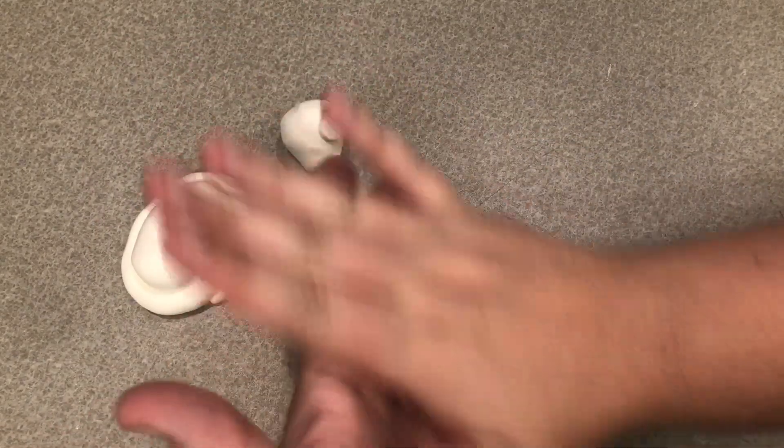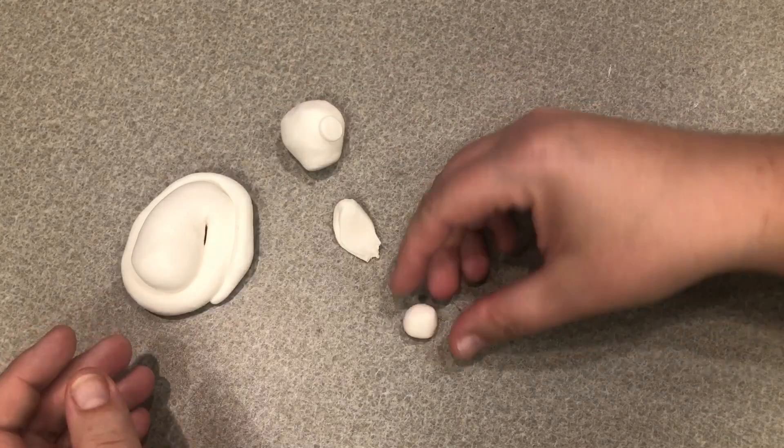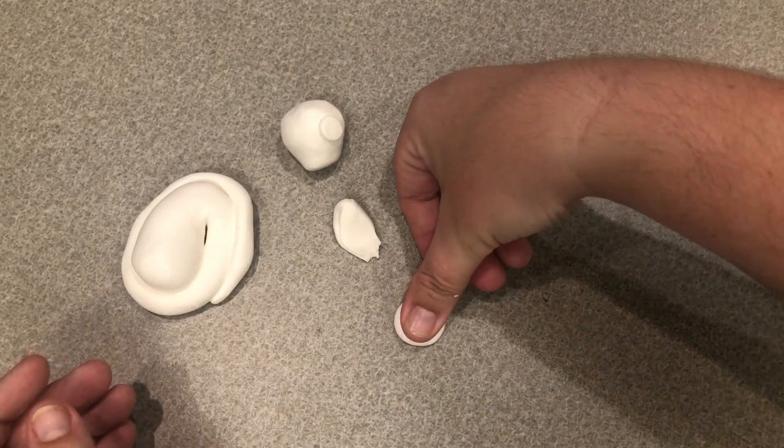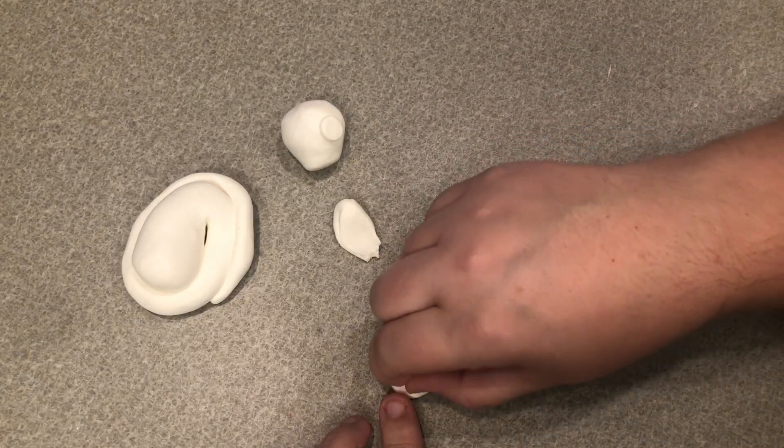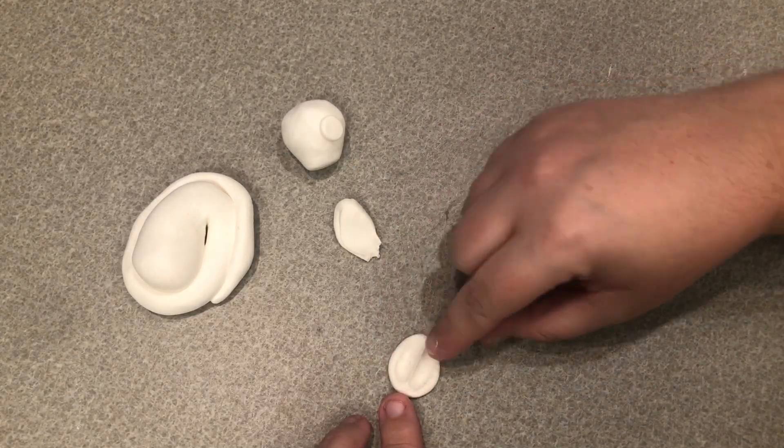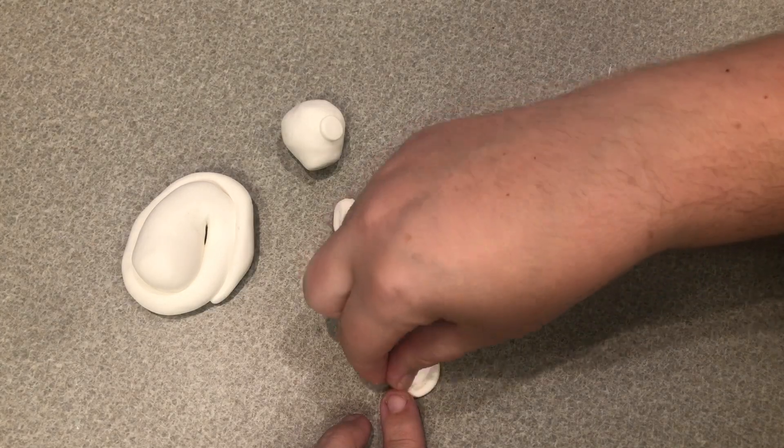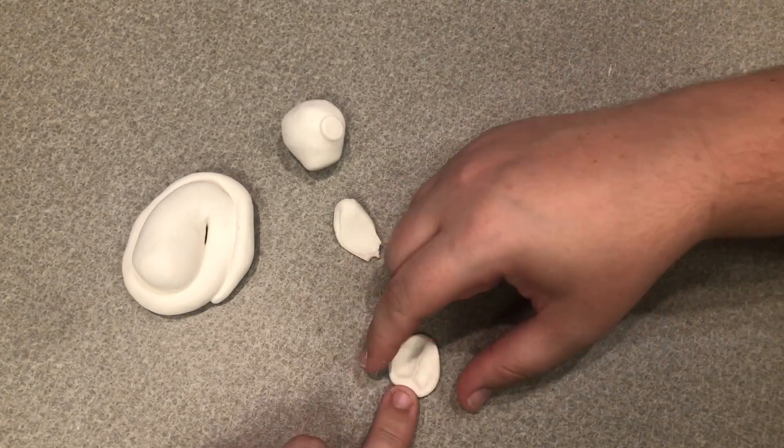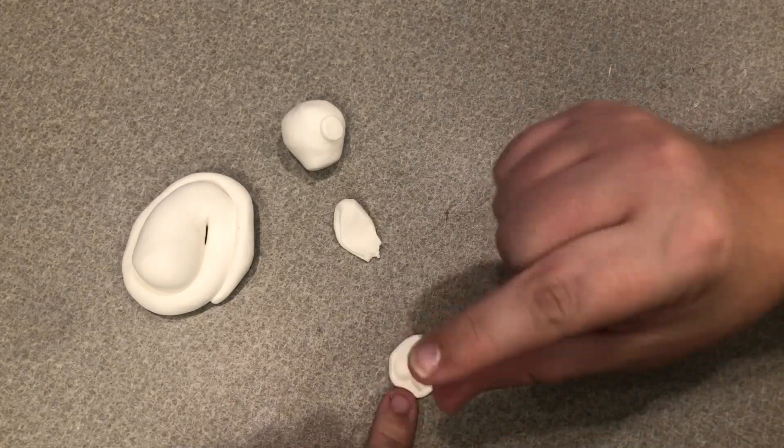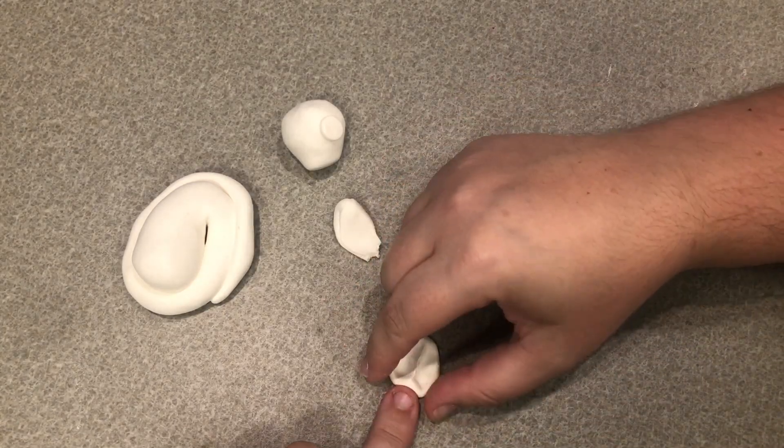I'm going to start out with a little ball and then I'm just going to press it with my thumb onto the table and then I'm going to go ahead and pinch across the middle of the ear to make a little ridge.